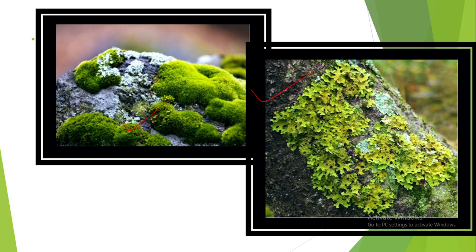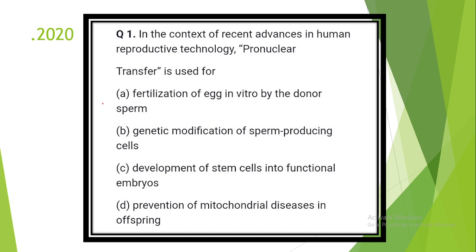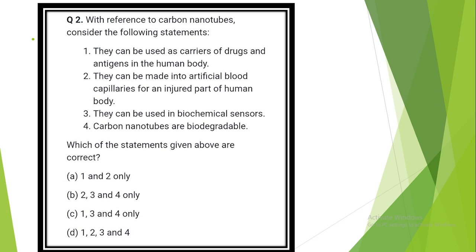Question 17. This is 2020 UPSC prelims questions related with the environment. In the context of recent advances in human reproductive technology, pronuclear transfer is used. The answer is option D: Prevention of mitochondrial diseases in offspring. Question 18. With reference to carbon nanotubes, consider the following statements. Option D is the correct answer. They can be used as carriers of drugs and antigens in human body. They can be made into artificial blood capillaries for an injured part of human body. They can be used in biochemical sensors. Carbon nanotubes are biodegradable.